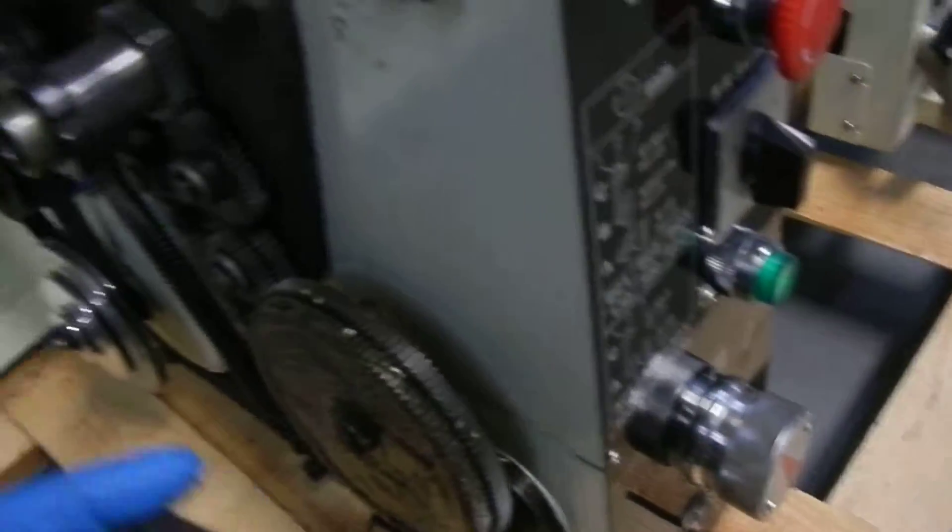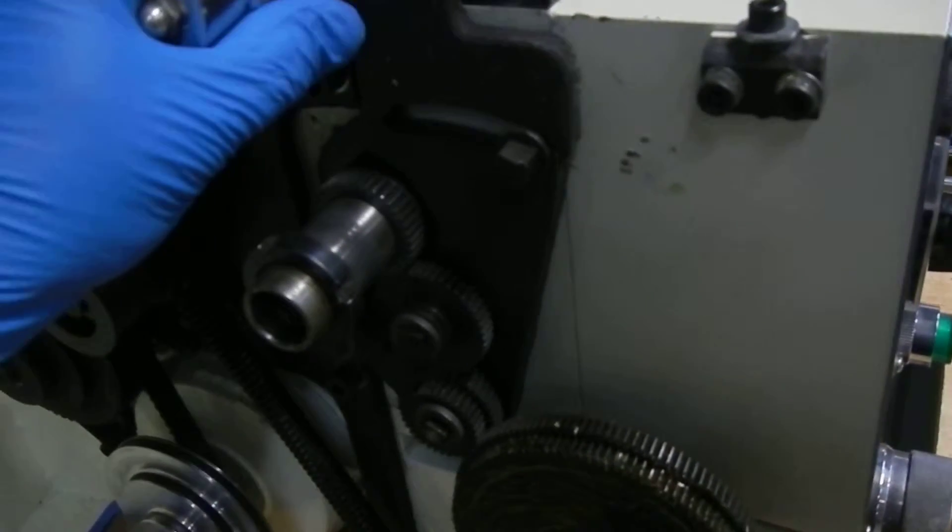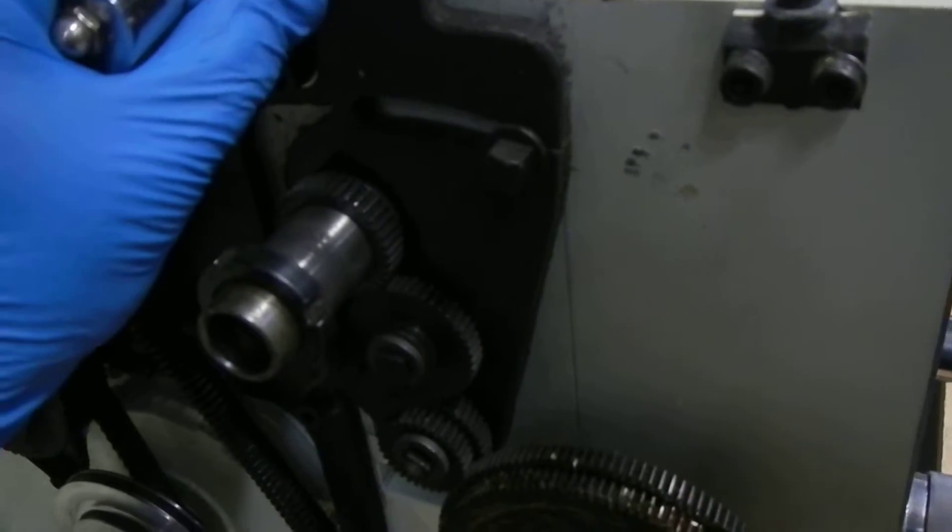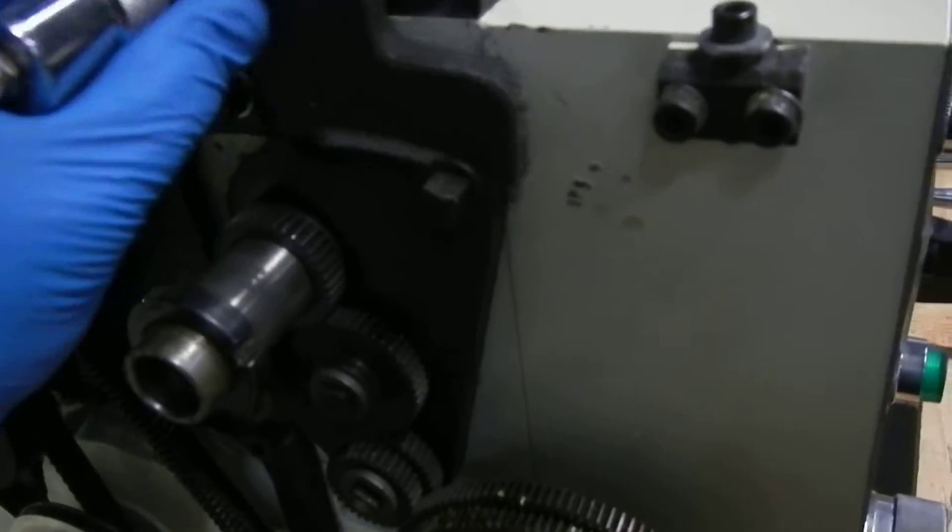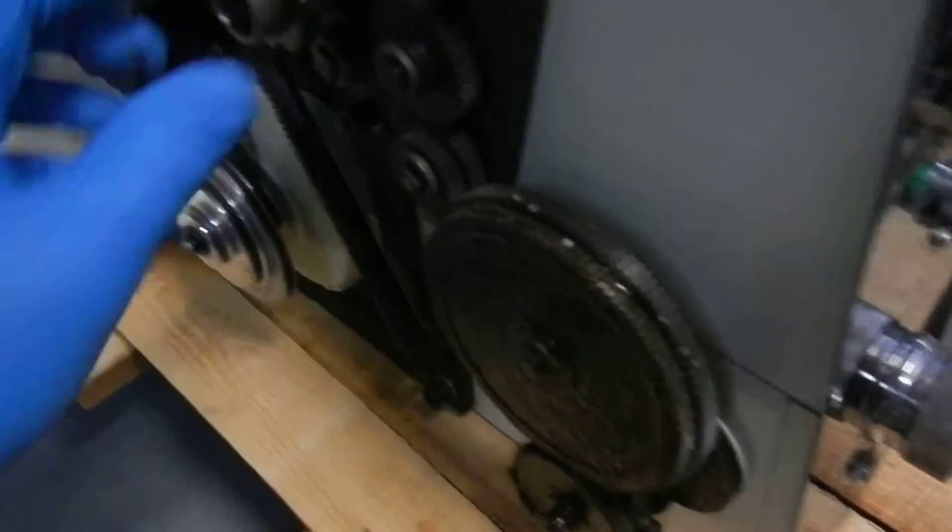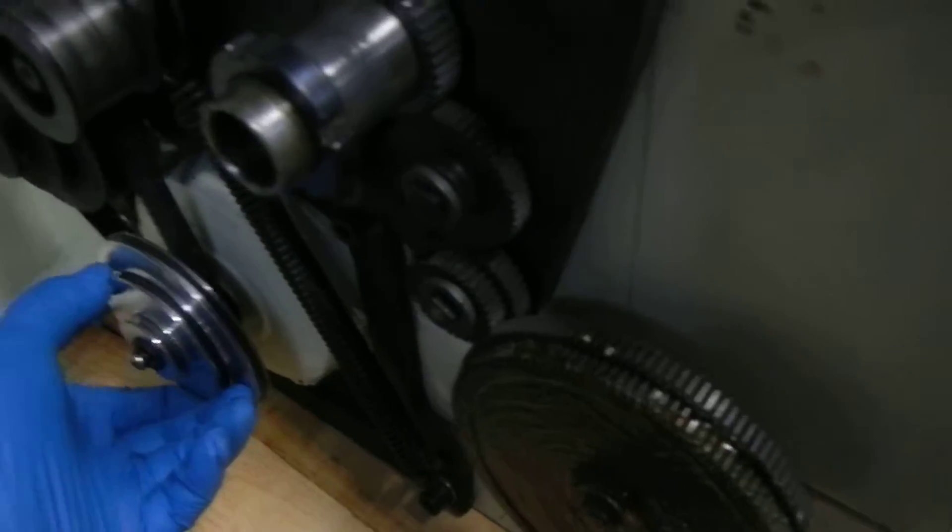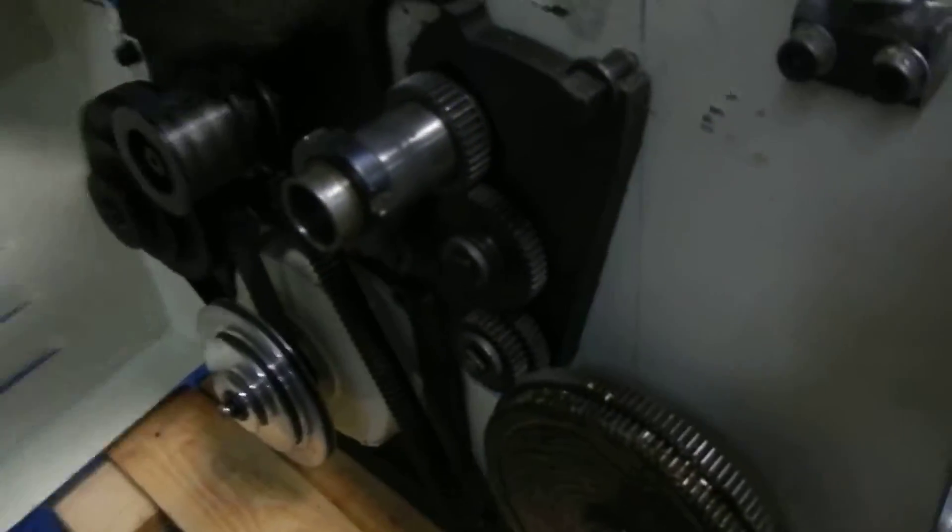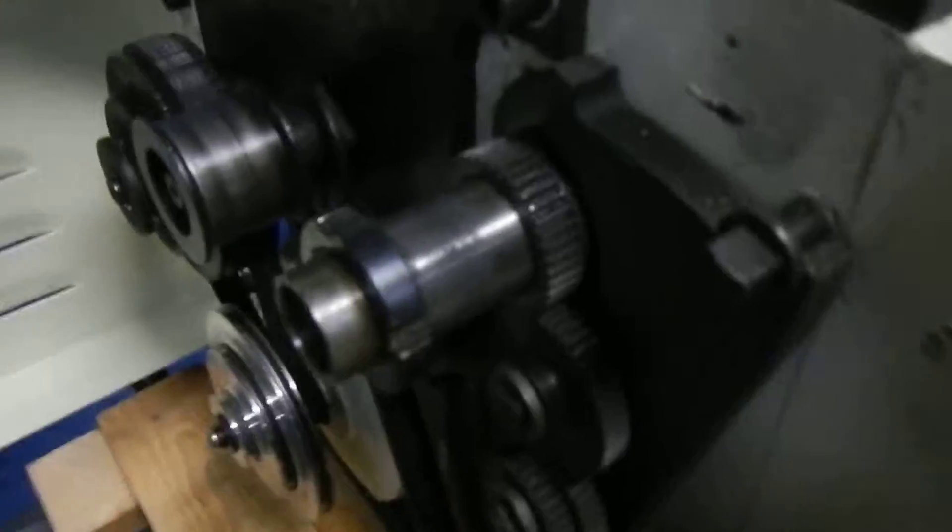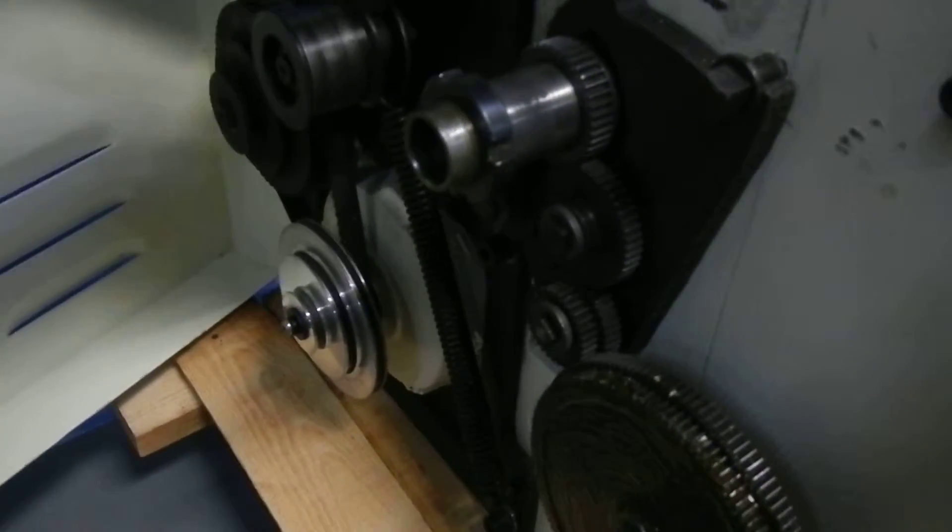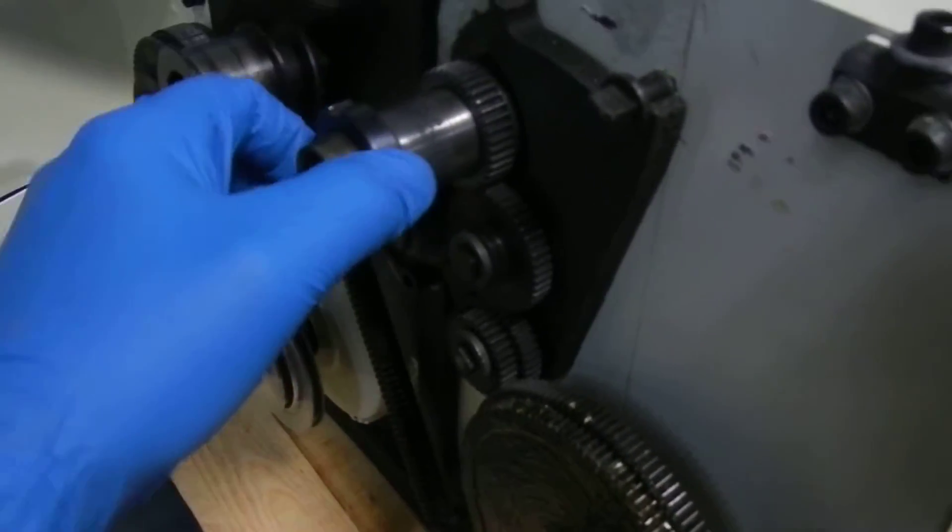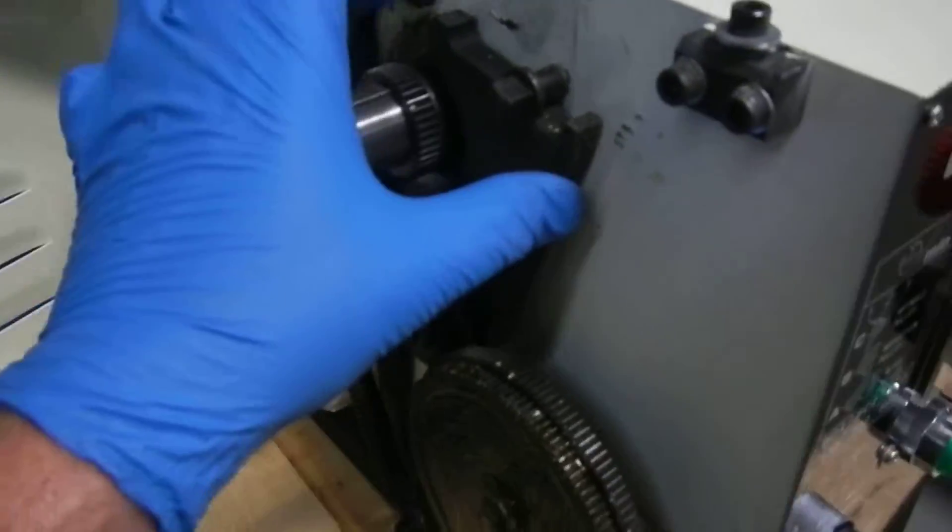This part right here broke off in transit. And also there's a pulley here that runs this pulley for the motor and your tensioner. Well, that pulley and the belt is missing. So you need to replace that.